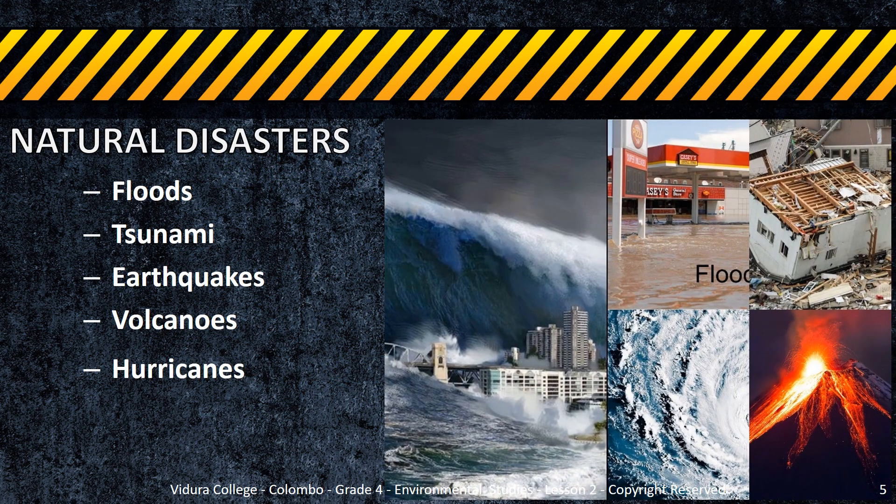Natural Disasters. A natural disaster is a major bad event caused by the natural processes of the earth. A natural disaster causes loss of life or property damage and leaves some economic damages costing millions. For example: floods, tsunami, earthquakes, volcanoes, and hurricanes.